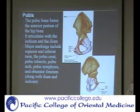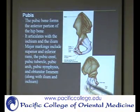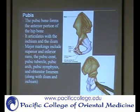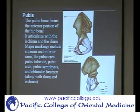And then you have the obturator foramen — that's this opening here in the pelvis. Part of that's on the pubic bone and part of that's on the ischium. We'll talk later about the different obturator muscles that attach on the obturator foramen.